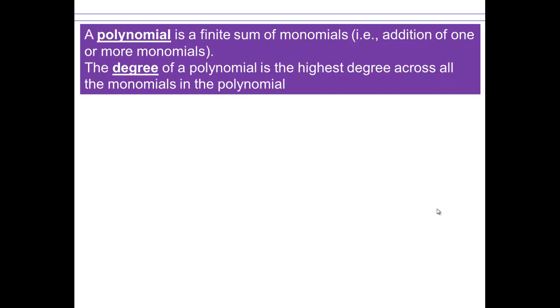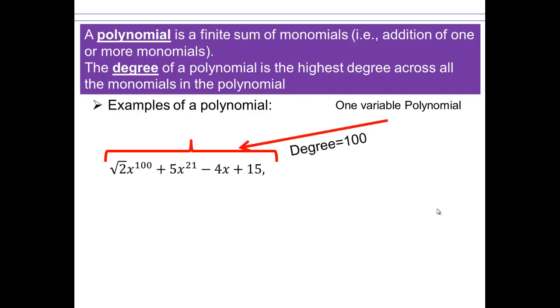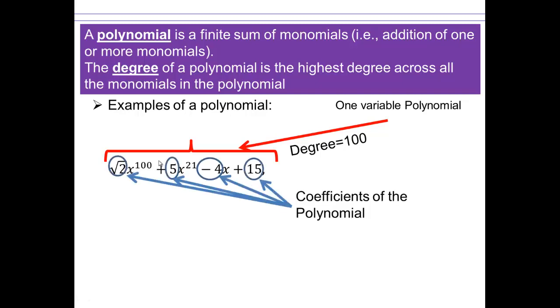All right, so now let's take a look at polynomials. A polynomial is a finite sum of monomials. That is addition of one or more monomials. And so the degree of a polynomial is the highest degree across all the monomials in the polynomial. So here we have a polynomial, and you can see that the degree of that polynomial is 100 because if you look at each term, 100 is the highest exponent in the terms that are being added. The numbers square root 2, 5, negative 4, 15 are called coefficients of the polynomial.